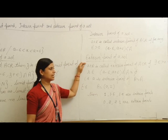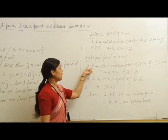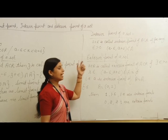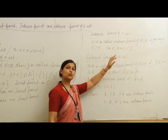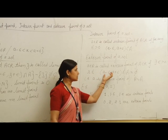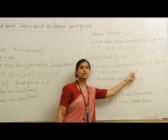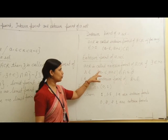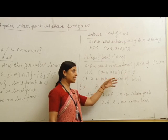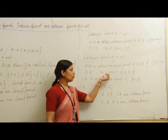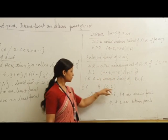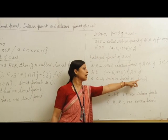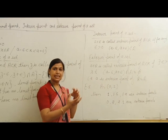Now come to the next point: exterior point of A. Let A be any real number and A be a subset of R. Then A is called an exterior point if there exists at least one epsilon greater than 0 such that (A minus epsilon, A plus epsilon) intersection A equals phi. That means there does not exist any neighborhood whose at least one point is in A. In other words, A is an interior point of the complement of A, meaning it lies outside set A.